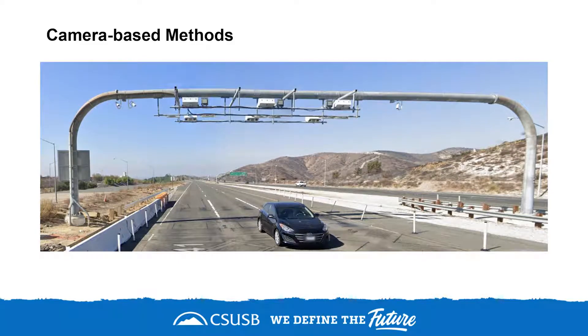The second method for counting vehicles is by using cameras. This picture shows a license plate reader from a nearby tow road. In the camera-based method, computer vision techniques are used to extract vehicle movement from camera footage. For plate readers, it requires an array of specialized high-speed cameras, but if it's just for counting vehicles, a consumer-grade camera can work reasonably well.